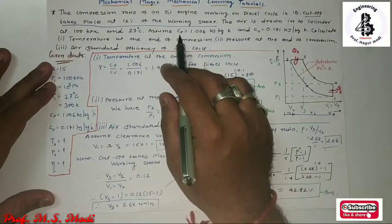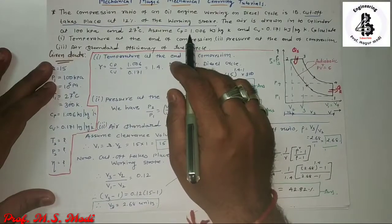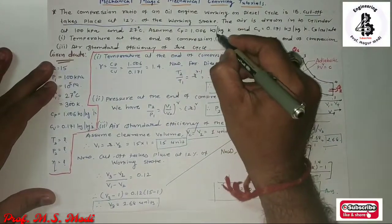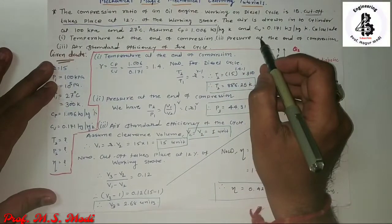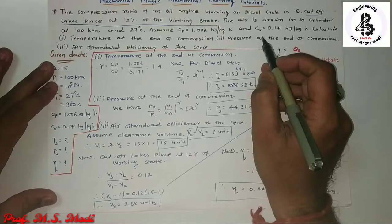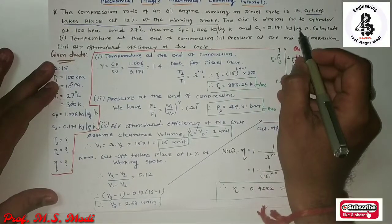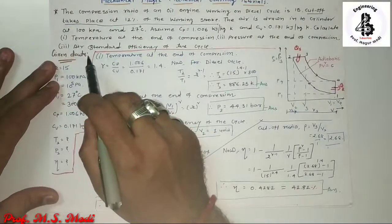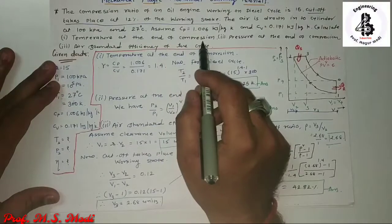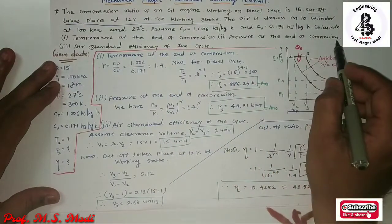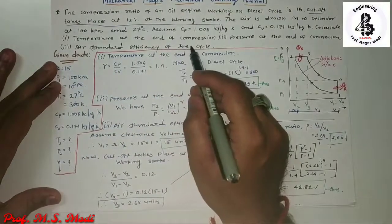Assume Cp, that means specific heat at constant pressure, is 1.006 kJ per kg Kelvin, and Cv, that means specific heat at constant volume, is 0.171 kJ per kg Kelvin. Calculate: first, temperature at the end of compression; second, pressure at the end of compression; and third, air standard efficiency of the cycle.